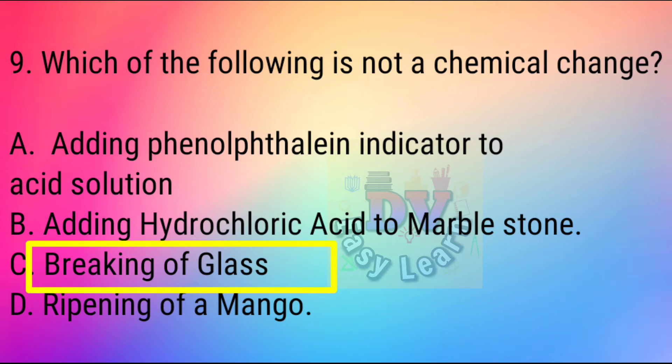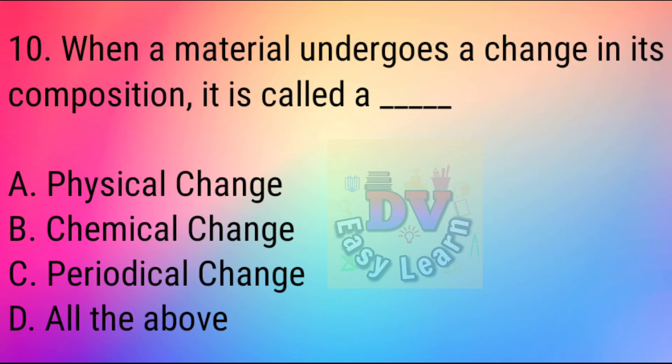Question No. 10: When a material undergoes a change in its composition, it is called — (chemical change).